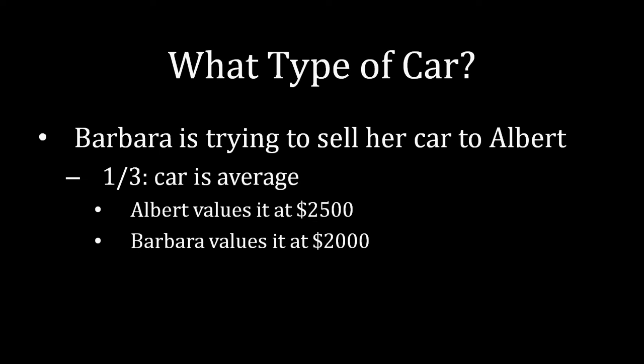Another third of the time, Albert thinks the car is average. Under these circumstances, the car isn't as valuable to either party — Albert values it at most at $2,500, and Barbara would need at least $2,000 to sell it. Notice again that if all information were revealed and Albert knew the car was in fact average, they should be able to negotiate an agreement that leaves them both better off.